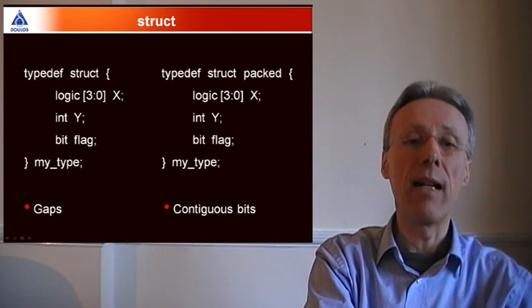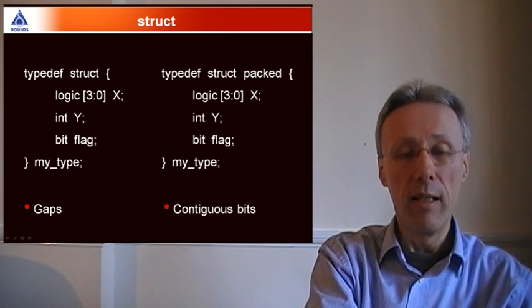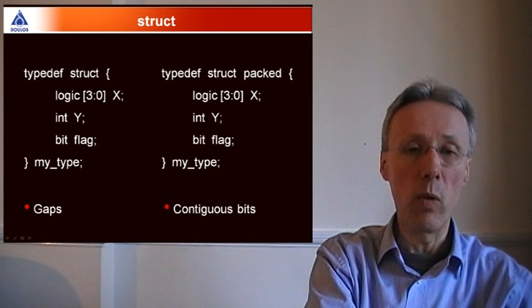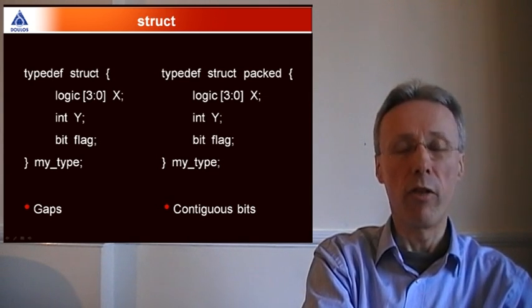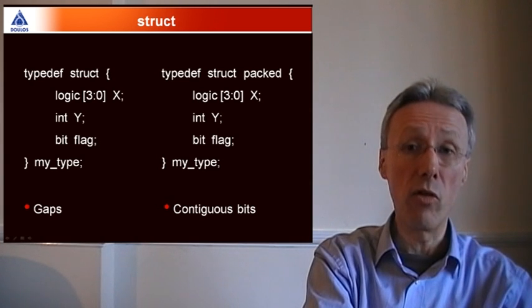If we declare this as an unpacked struct, then the compiler is free to decide how much memory it's going to allocate. It's probably going to allocate three 32-bit words, one for each of the fields within the struct.